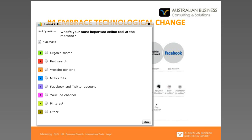Let's ask another poll question to get an idea of your current activities and to help us know what to focus on for future webinars. What's your most important online tool at the moment? Is it organic search, paid search, website content, your mobile site, Facebook and Twitter account, your YouTube channel, Pinterest, or maybe something else? It looks pretty clear that website content and organic search results are the things most used by the people here today.